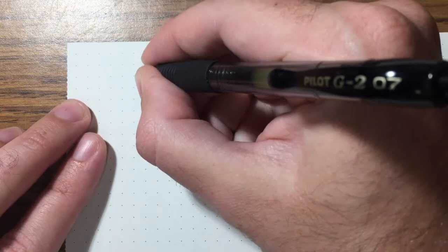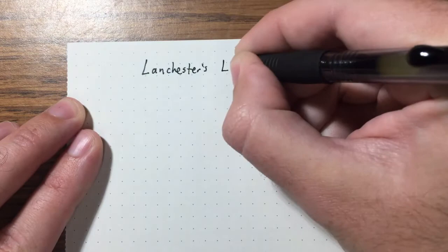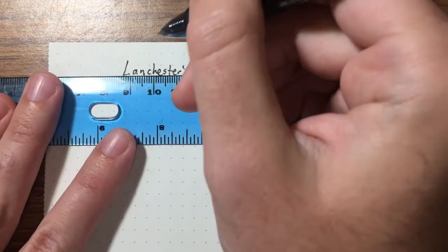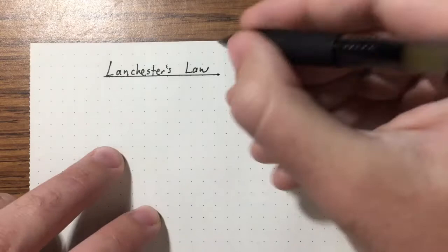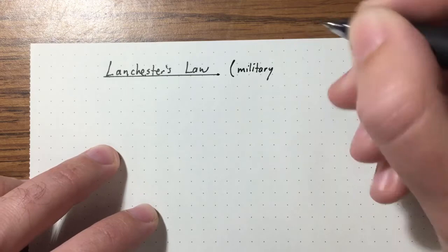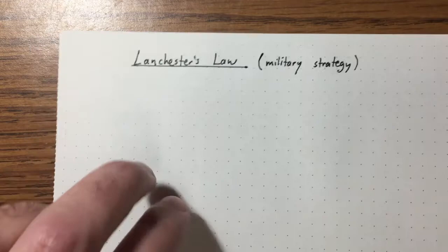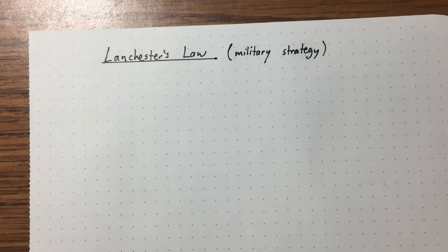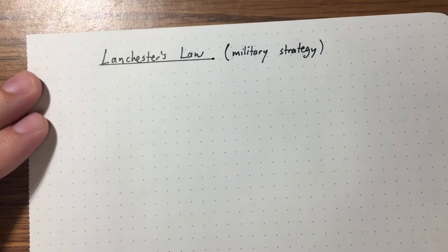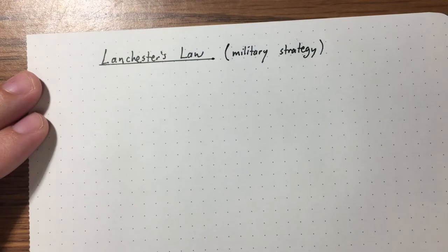Our second example is called Lanchester's law. Lanchester's law is actually not from physics — it's from something very different: military strategy. The setup involves two armies: army A and army B.